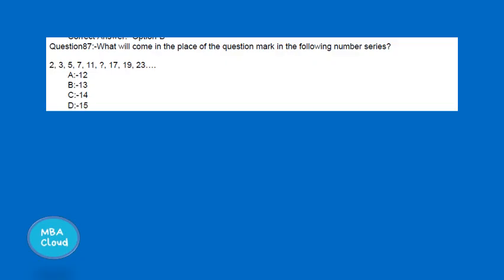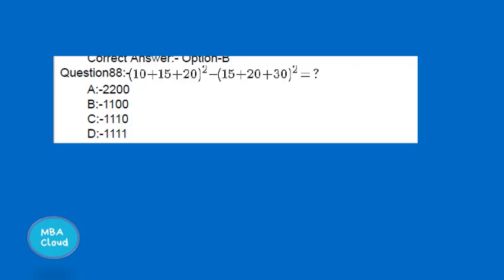The right answer is A for that question. Next: what will come in place of the question mark in the following number series? The series is 2, 3, 5, 7, 11, ? — this is a prime number series, so the right answer is 13.